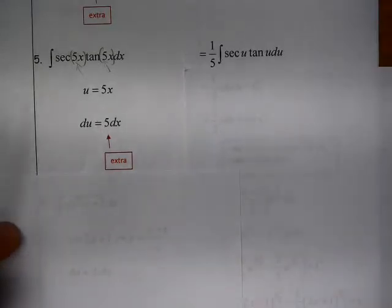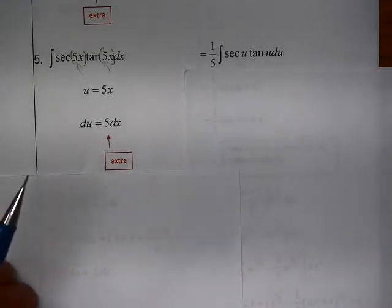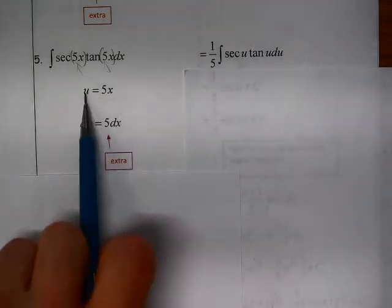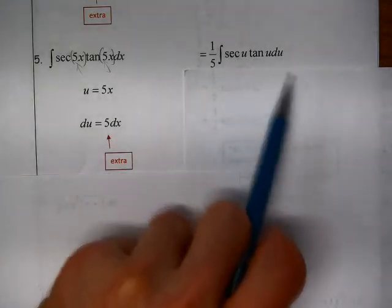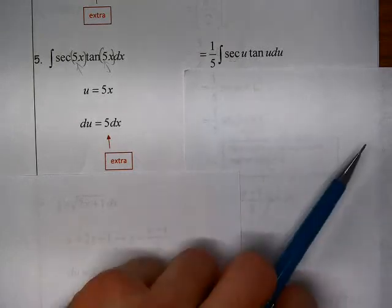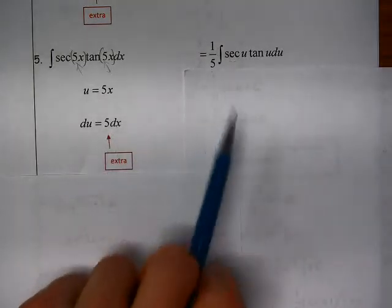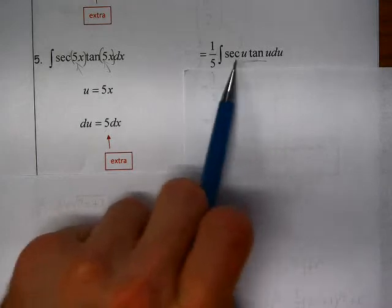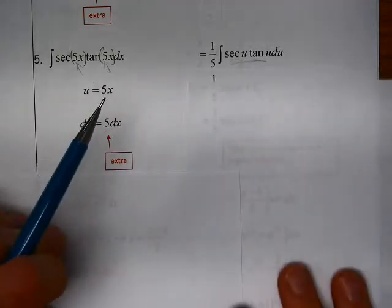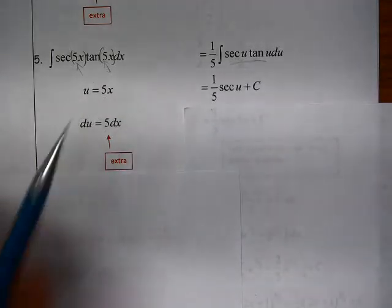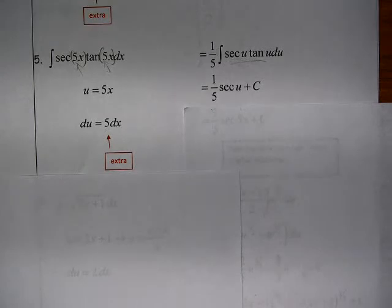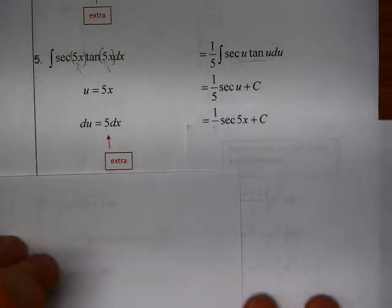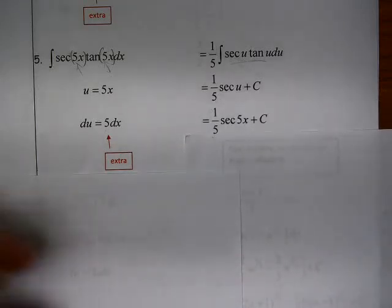By this simple u equals 5x, I have secant u tangent u du with that 5 offset with a one-fifth. When I see this, I should recognize that as the end result of one of my derivative rules. The anti-derivative of secant tangent is secant. So I have one-fifth secant of u plus c. And then at last, I substitute that 5x back in for u.